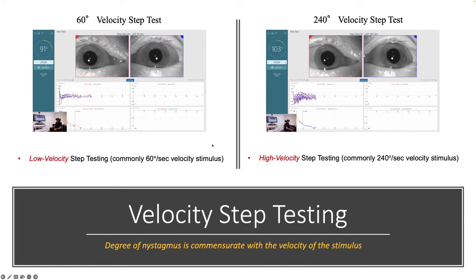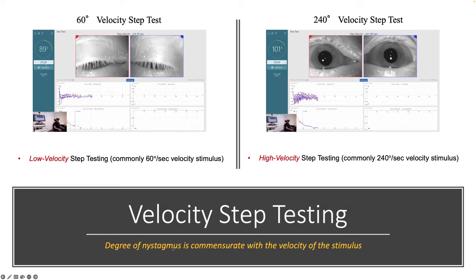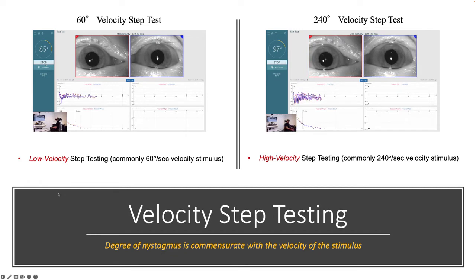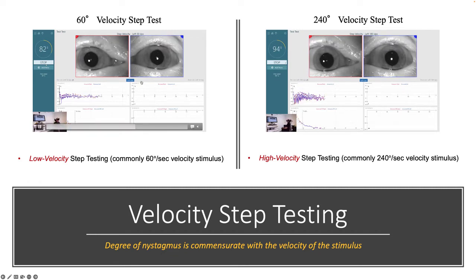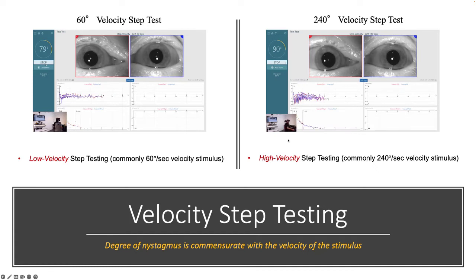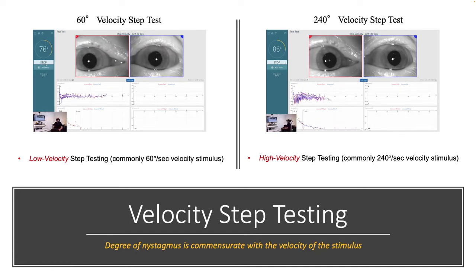What you'll notice is that the degree of nystagmus is commensurate with the stimulus of rotation. So the slow stimulus rotation produces a slow VOR, and as you saw earlier, the high stimulus produces a high degree of VOR.